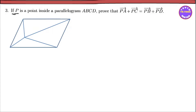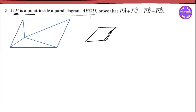If B is a point inside, in the second part we have a parallelogram ABCD. We have a parallelogram ABCD. When we start to see the second part, we have a parallelogram ABCD.